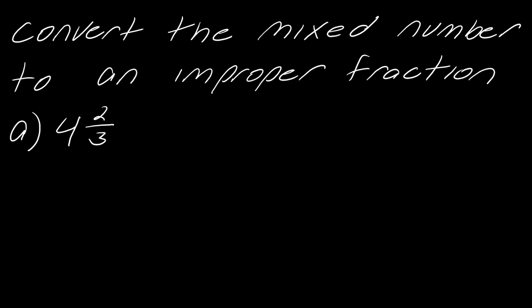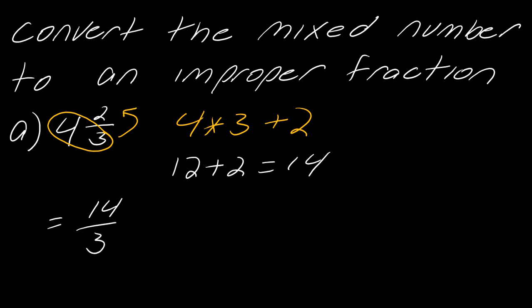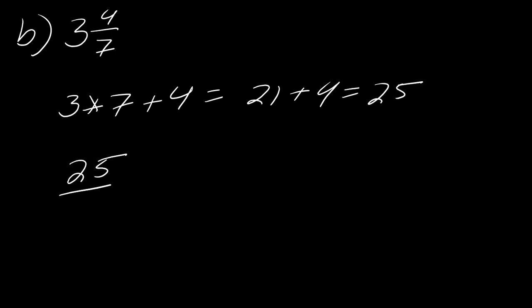Going the other direction — from mixed number to improper fraction — is actually much simpler. To convert 4 and two-thirds: multiply the whole number by the denominator (4×3=12) then add the numerator (12+2=14). Put 14 over the original denominator to get 14 over 3. For the practice problem: 3×7=21, plus 4 equals 25, so the improper fraction is 25 over 7.